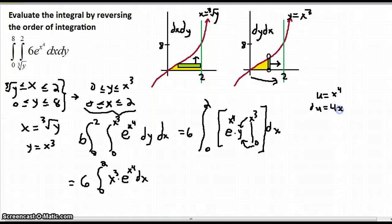So that x cubed dx gets replaced by 1 fourth of du.